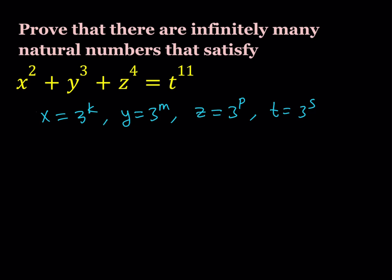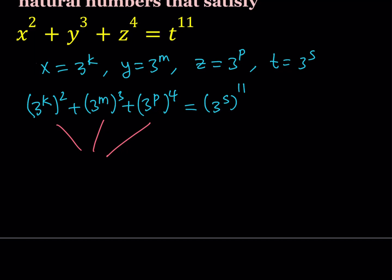Now when I do the replacements, this is what happens. This is 3 to the k squared, 3 to the m cubed, 3 to the p fourth power, and on the right hand side we have 3 to the s to the power 11. At this point, if all these terms are equal, then that will be convenient because we can basically multiply one of them by 3, which is going to give us the sum on the right hand side. So, what I'm trying to say is, if 3 to the power 2k equals 3 to the power 3m and that equals 3 to the power 4p...